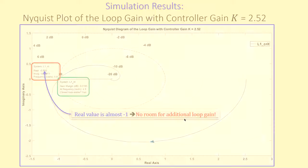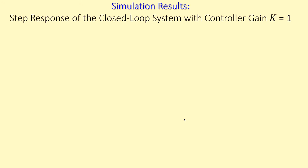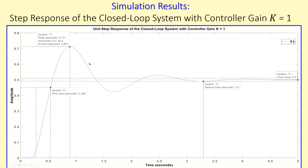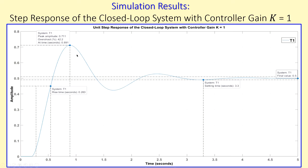Now let's look at the unit step response of the closed-loop system for case one (K = 1). The system is stable, but the overshoot is quite large at 42%.